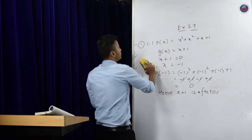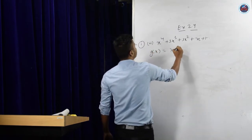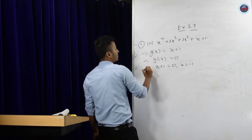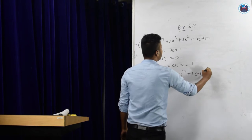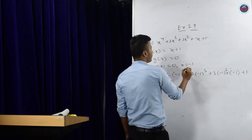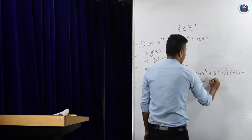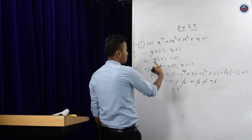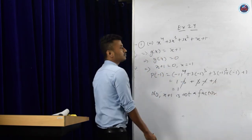Let's do question 3 from the same question. G(x) is still x plus 1, so x equals minus 1. Put this value into P(x): P(−1) = (−1)⁴ plus 3(−1)³ plus 3(−1)² plus (−1) plus 1. This becomes 1 minus 3 plus 3 minus 1 plus 1 = 1. Since the answer is not 0, we write: x plus 1 is not a factor.